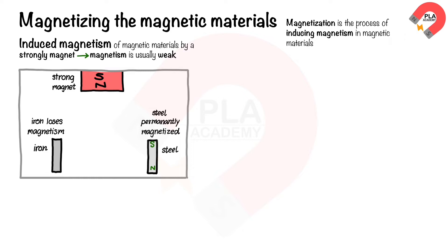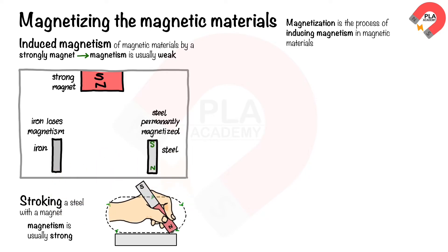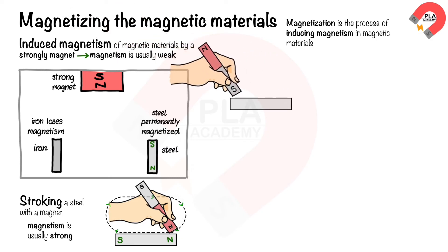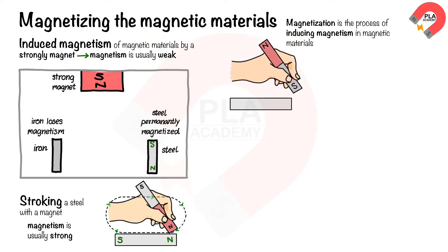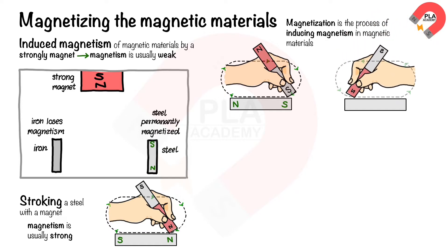The second method is magnetizing by stroking with a magnet, which can produce a stronger magnetization. A steel bar is stroked with the north pole of a magnet in one direction. The end where stroking begins is magnetized to be a south pole, and the other end becomes a north pole. When a south pole is stroked along the steel bar in the opposite direction, the stroked end is magnetized to be a north pole and the other end becomes a south pole.